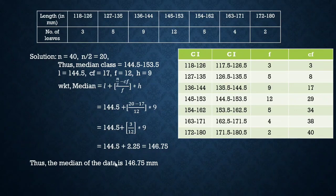Substituting and simplifying: Median = 144.5 + (20−17)/12 × 9 = 144.5 + 2.25 = 146.75 mm. So the median length of the leaves is 146.75 millimeters.